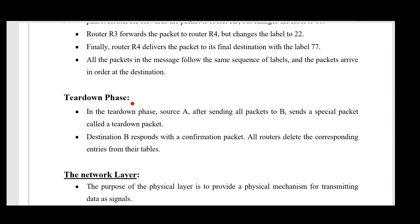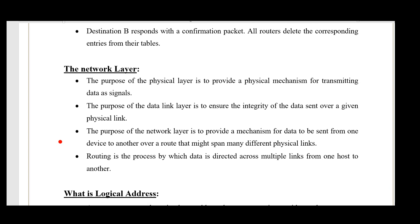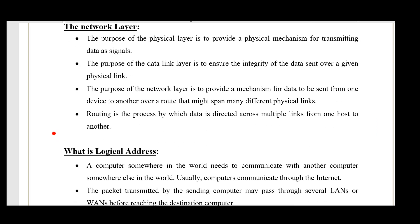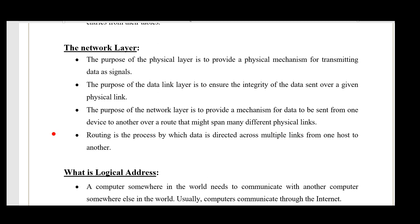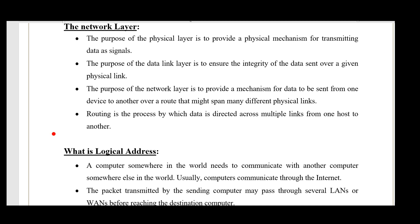In the teardown phase, once source A has sent all its packets, it sends a teardown packet asking B to disable the connection. Once all packets are received by B, B confirms and that link is deleted. This completes the connection-oriented routing process.